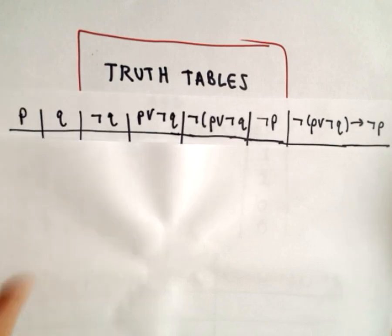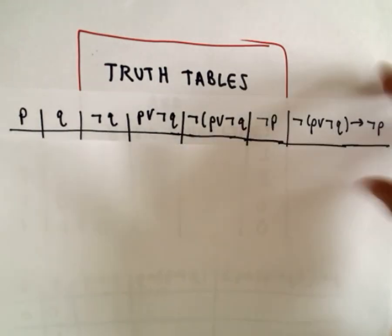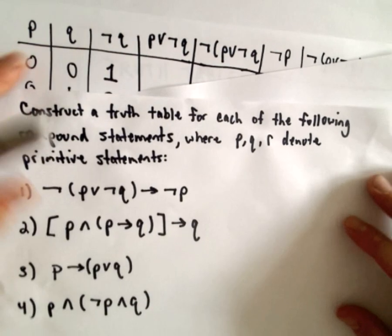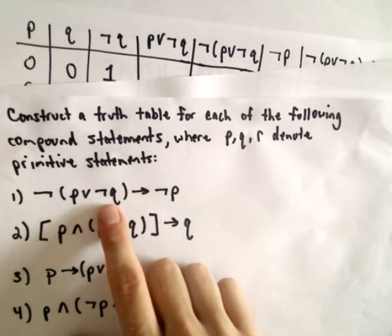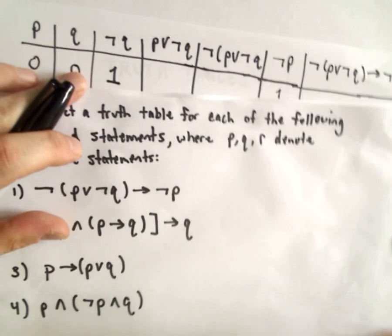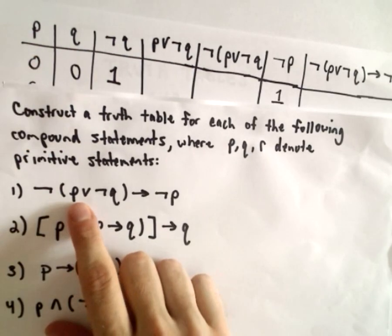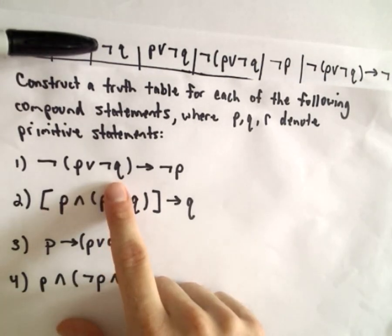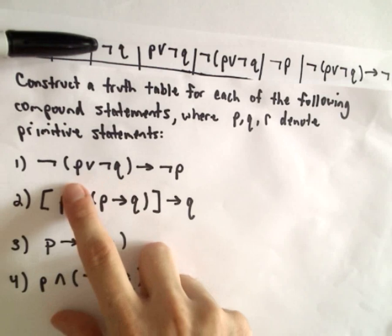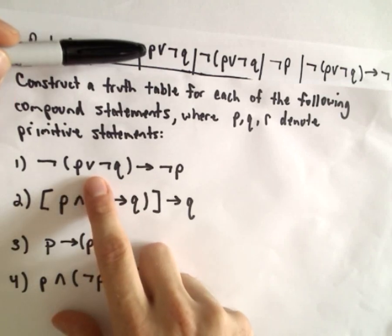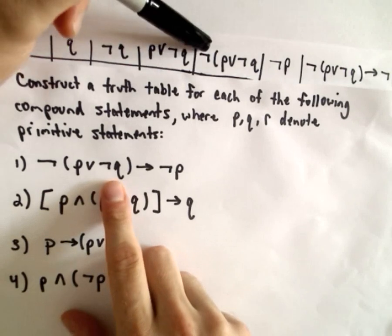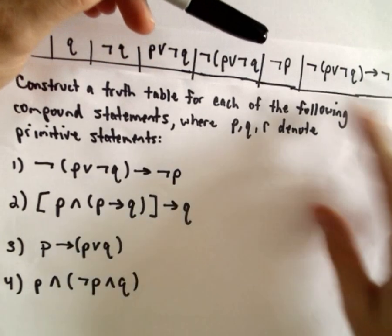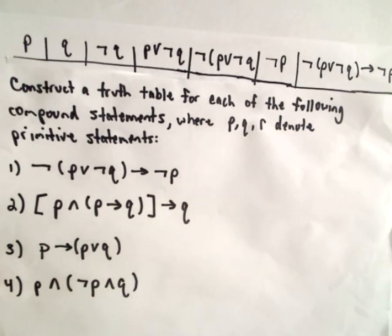So to get started, what statements do I need truth values for? Well, I see that we need not Q in there, right? We've got P or not Q. So I'm going to have my not Q column. Let me try to cover that up. So I'm going to eventually have a column for not Q. I need to have P or not Q, so there's the column for that. I need to have the negation of that statement. I also need to have not P, and then I need the final statement that I'm interested in.